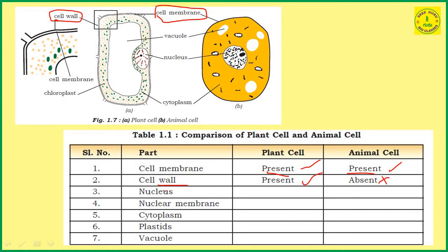Next, nucleus. The nucleus is present in both plant cells as well as animal cells. Next, nuclear membrane — the membrane which surrounds the nucleus is known as the nuclear membrane. Both plant and animal cells have a nuclear membrane. Wherever the nucleus is present, it is surrounded by a nuclear membrane. This is one of the characteristic features of eukaryotic cells, where the nucleus is clearly bounded by a membrane. So nuclear membrane is present in plant cells as well as animal cells.